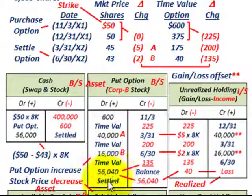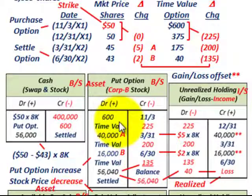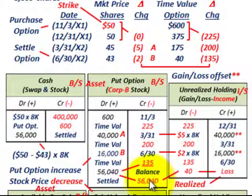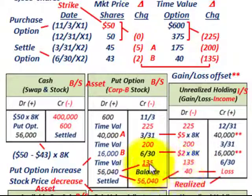Now we settle the option. We net out all the debits and credits in the put option account — the increases and decreases — arriving at a balance of $56,040. At settlement, we credit the put option account for $56,040 to close it out, and we need to determine if we have any realized gain or loss.